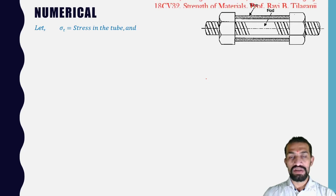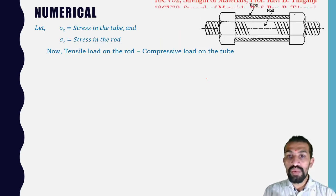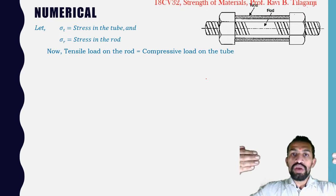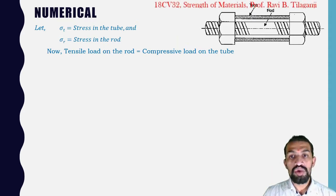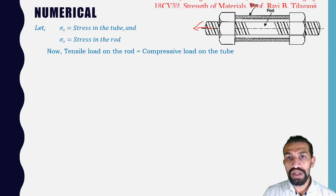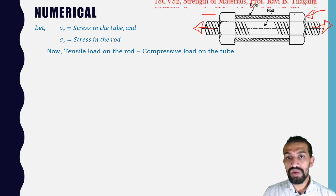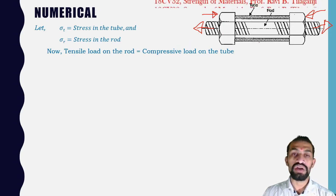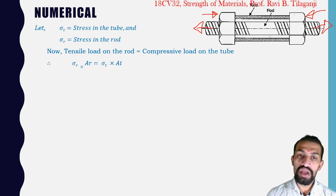Let σT = stress in the tube and σR = stress in the rod. Tensile load on the rod equals compressive load on the tube: σR × AR = σT × AT. Both forces are equal and opposite — tension in rod, compression in tube.